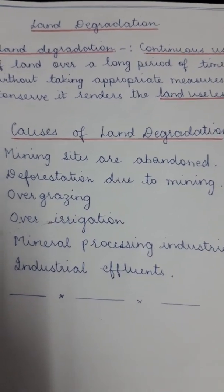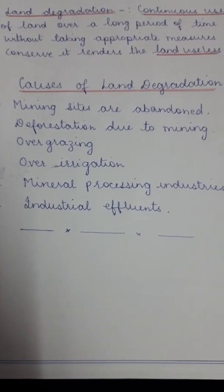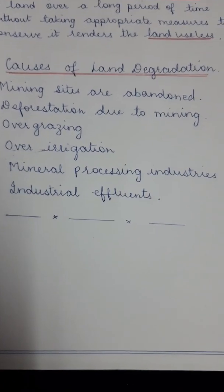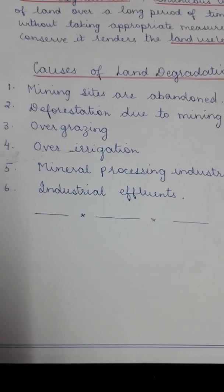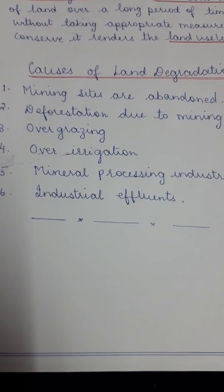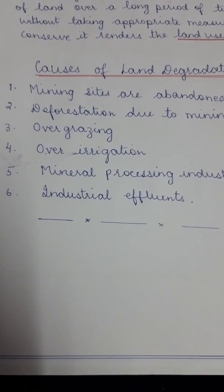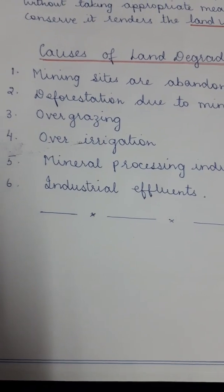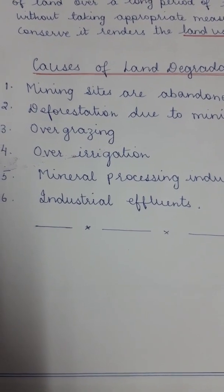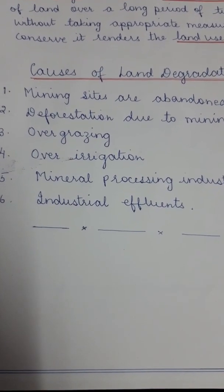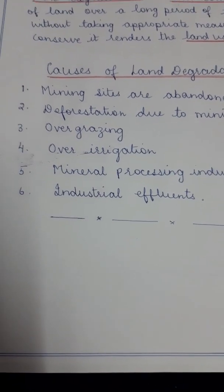The causes of land degradation: the first cause is mining — sites are abandoned after mining, craters are created and left as is, which degrades land. Second is deforestation — a lot of forests are cut for mining, which leads to land degradation. Third is overgrazing, which causes a lot of land degradation through soil erosion. Fourth is over-irrigation — in states like Punjab and Haryana, due to over-irrigation, the land becomes saline and alkaline, leading to degradation.